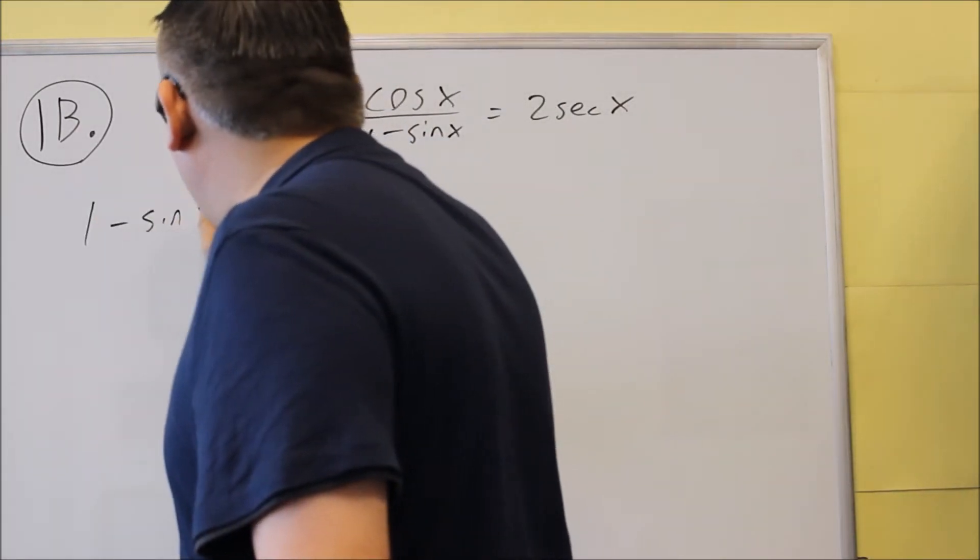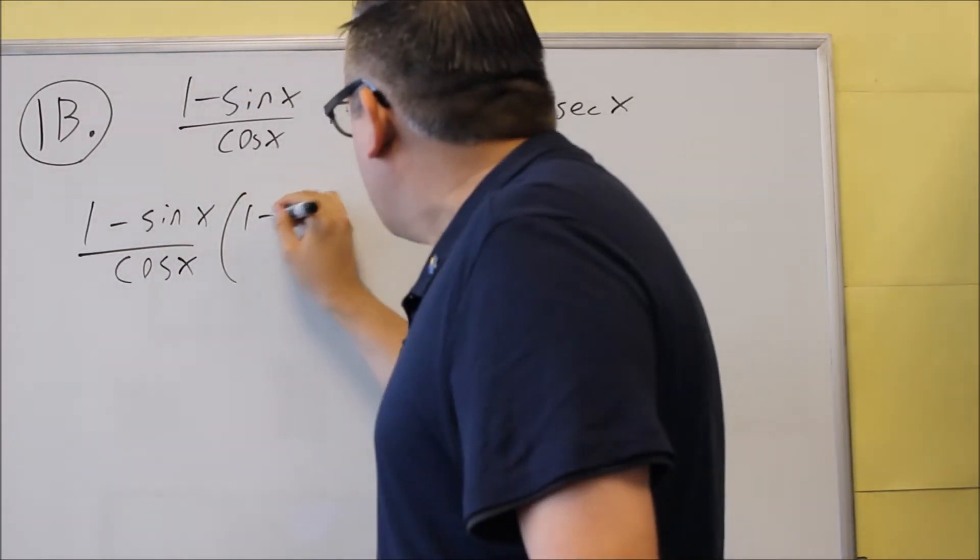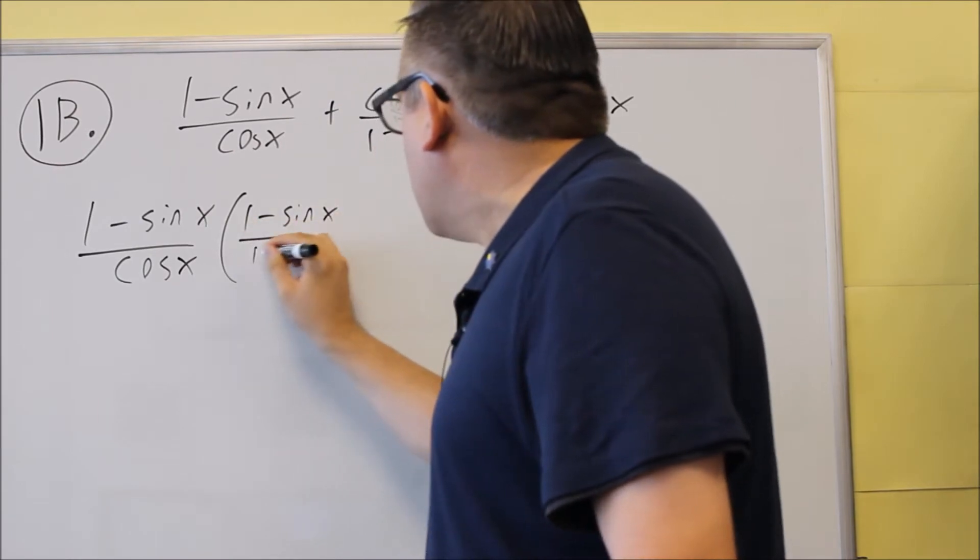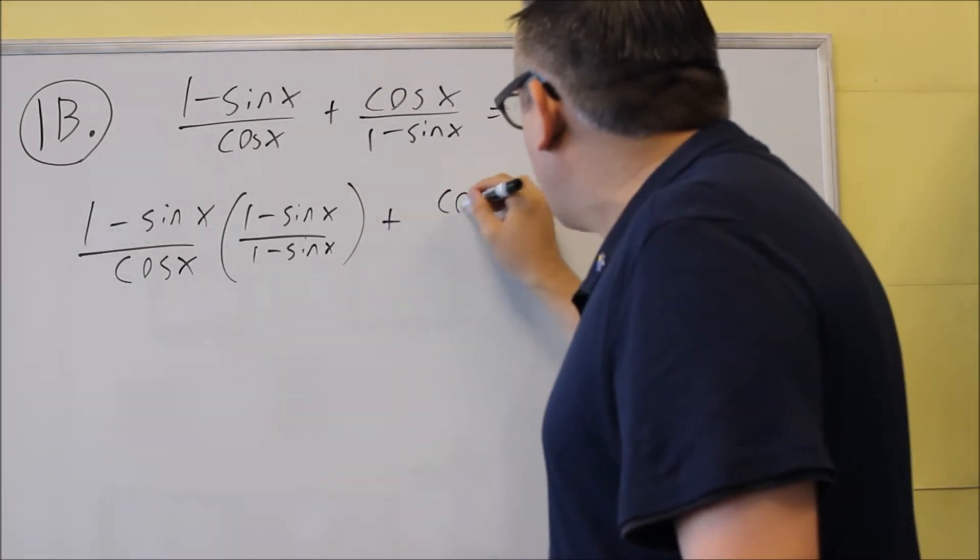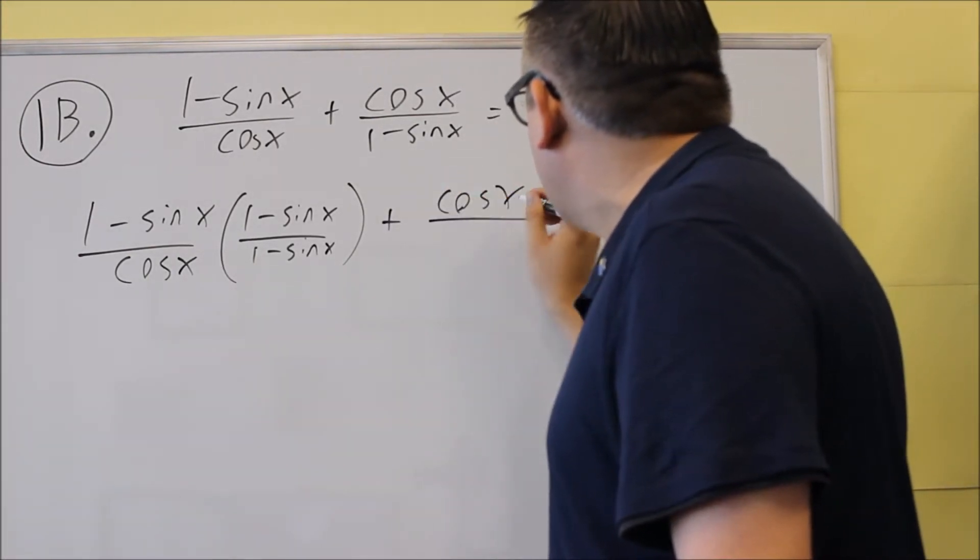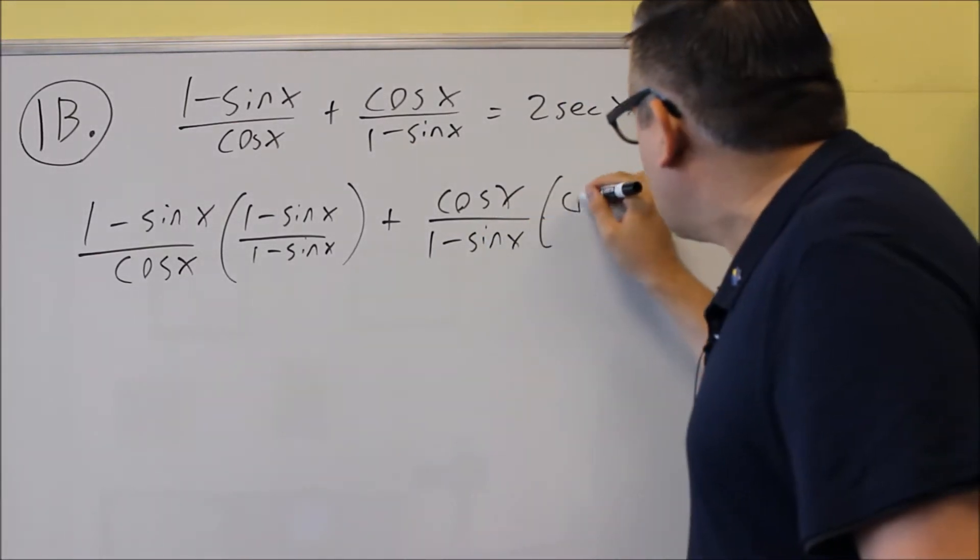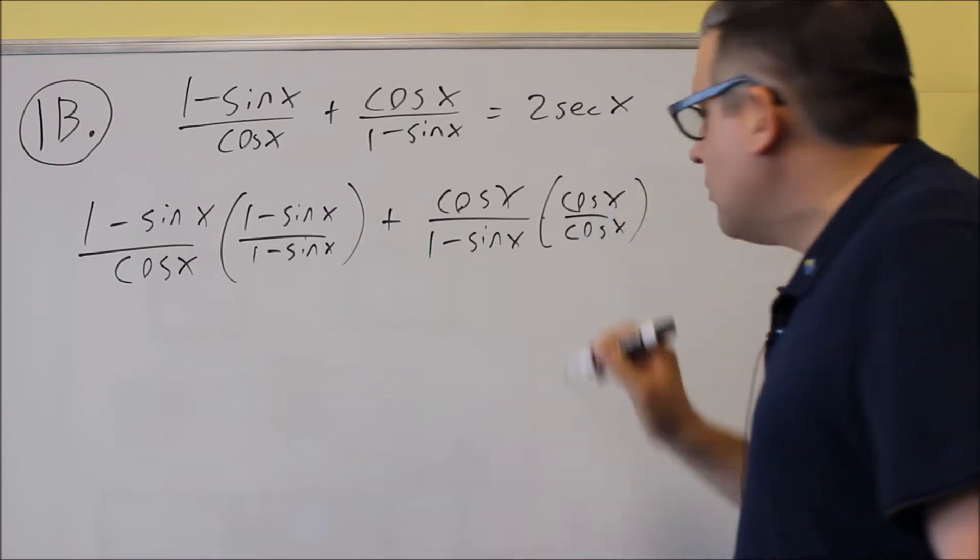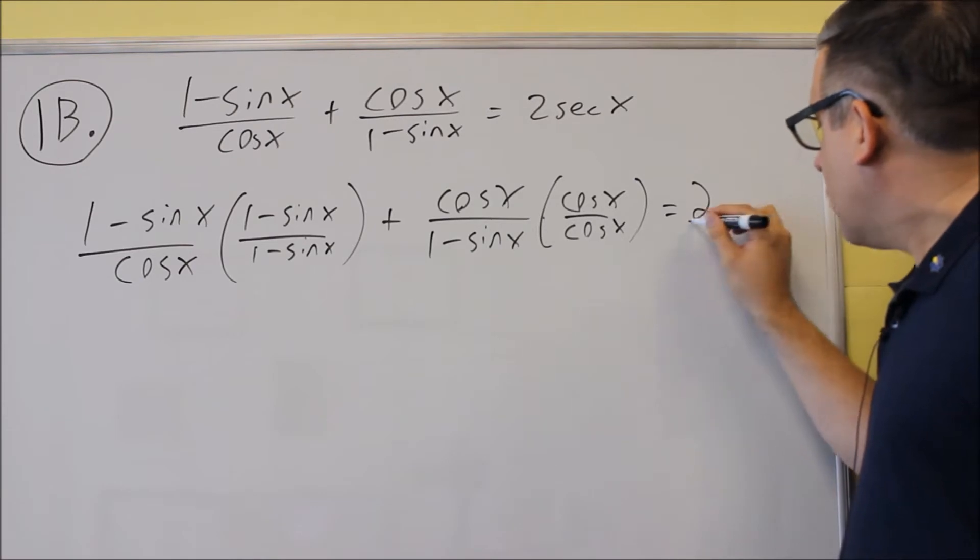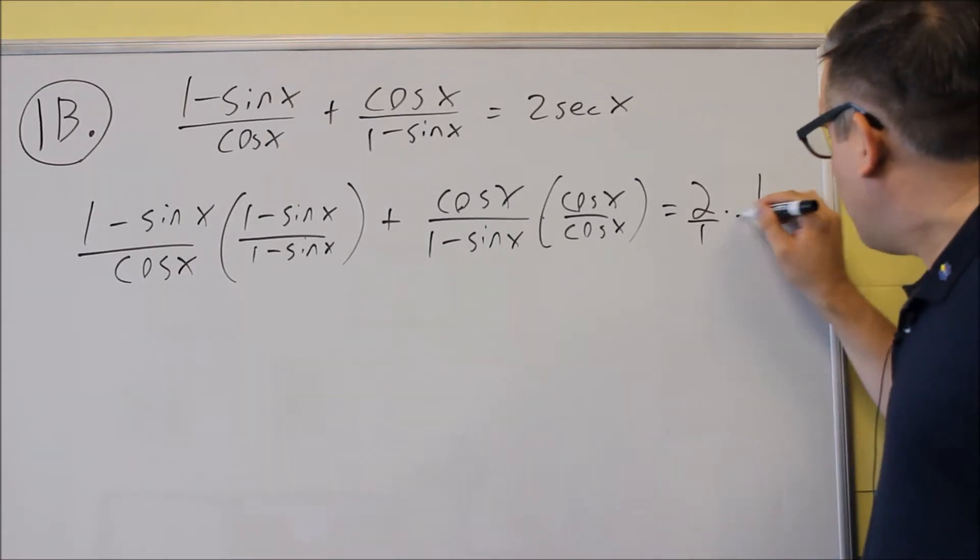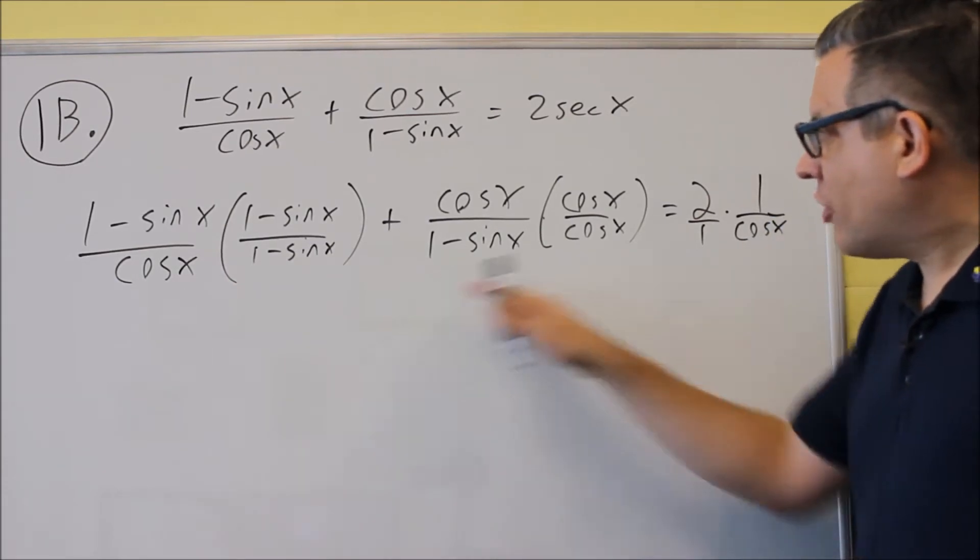First, this one has the cosine x in the bottom that we need, but it's missing 1 minus sine x, so I'll multiply top and bottom by 1 minus sine x. Next, this one over here has the 1 minus sine x, but we're missing the cosine x, so I'll multiply top and bottom by cosine x. On the right-hand side, I have a 2 here, which I can express as 2 over 1, and I'll put in a cosine x in place of the secant. So I've kind of done those two strategies.